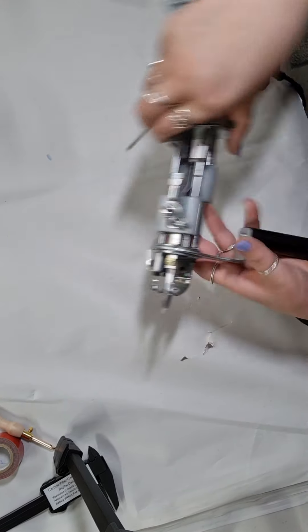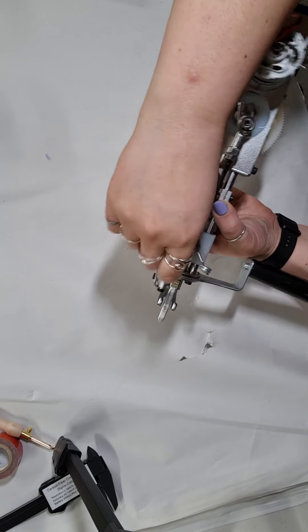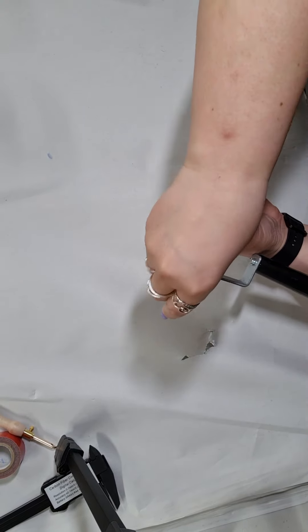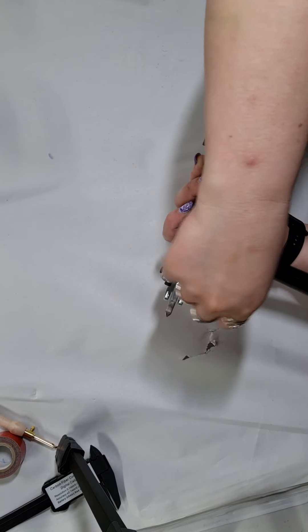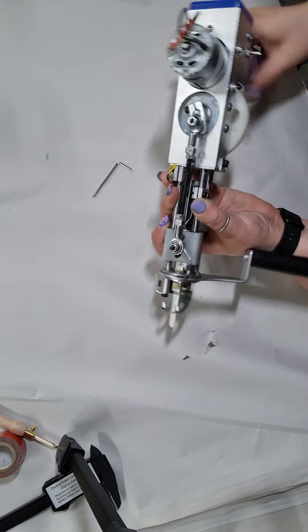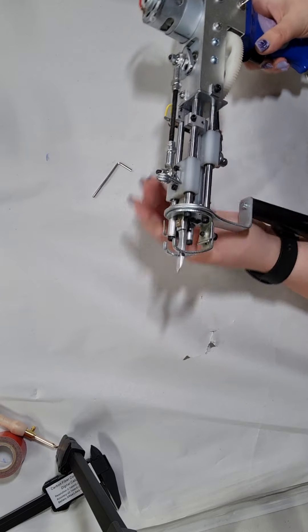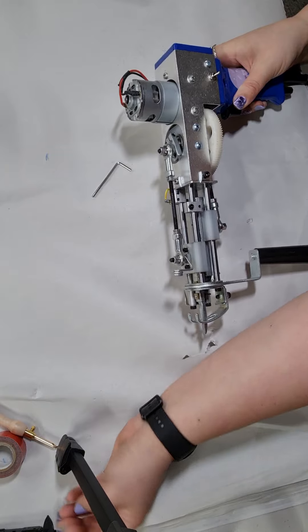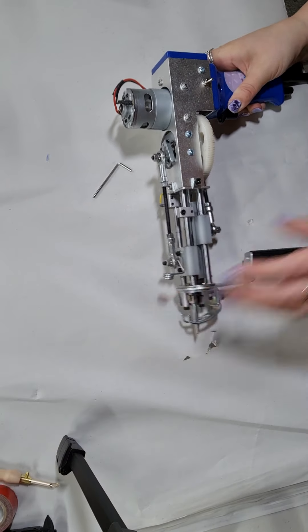We're just going to grab this Allen key and loosen this—not too much, just one turn. Otherwise, you're going to end up having to take the whole top part of the gun off, and that's not very fun.